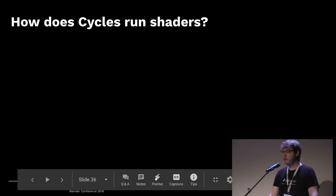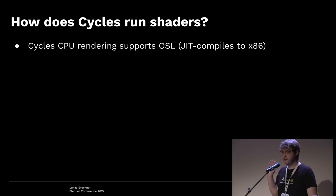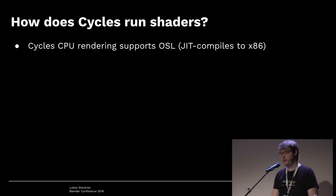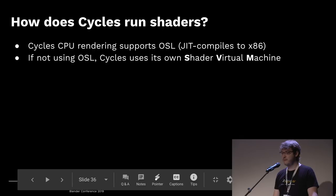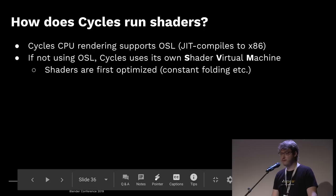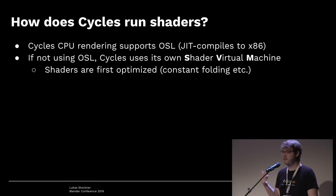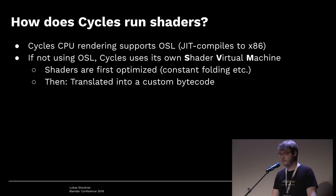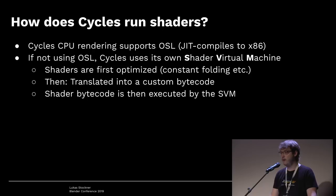How does Cycles actually run these shaders? For CPU rendering with OSL, it compiles your code to something the CPU can run natively, which is pretty efficient. Otherwise — for example for GPU — Cycles has its own virtual instruction set and compiles your shader to that. It first optimizes: a math node doing 2+3 gets replaced with a value node saying 5; the same node network used three times gets merged into one output connected to three inputs. Then it translates to custom instructions and interprets those to run the shader on GPU or CPU.